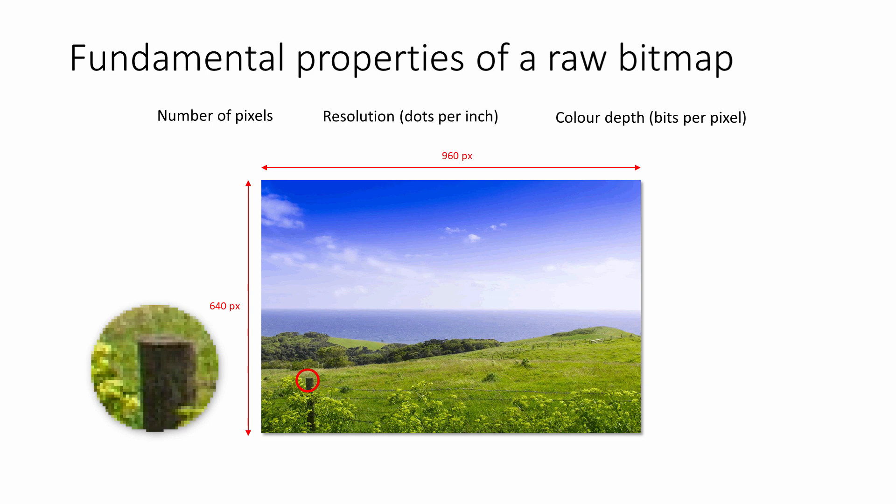More bits per pixel means that more different colours can be used in the image if necessary. With 8 bits per pixel, a bitmap can have up to 2 to the power 8, that's 256 different colours. This 8-bit image looks pretty good, but you might have noticed some banding in the sky.